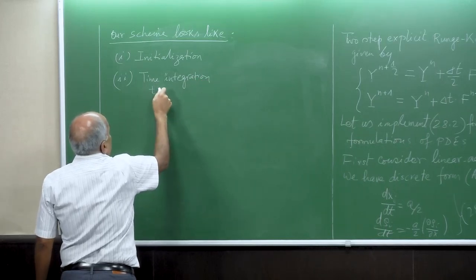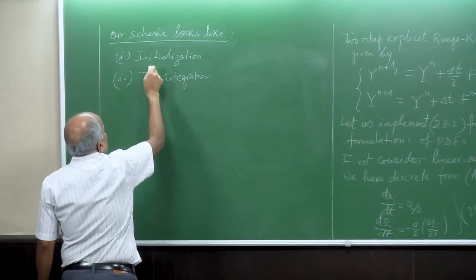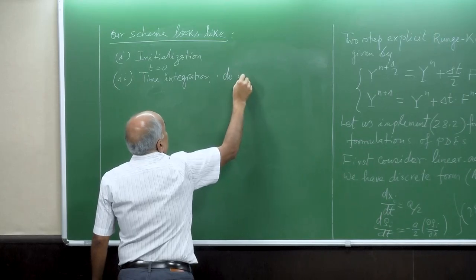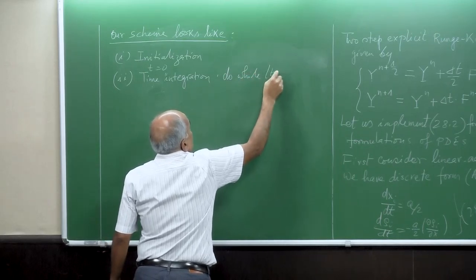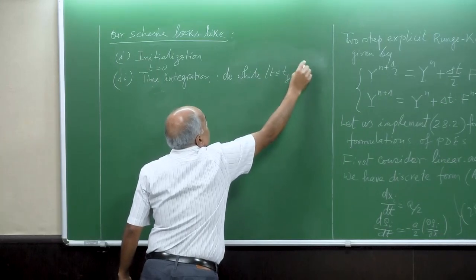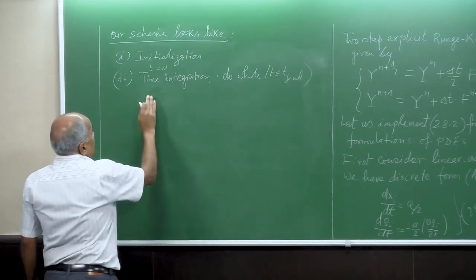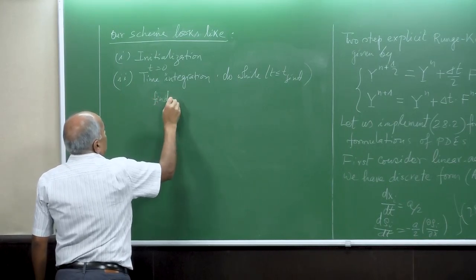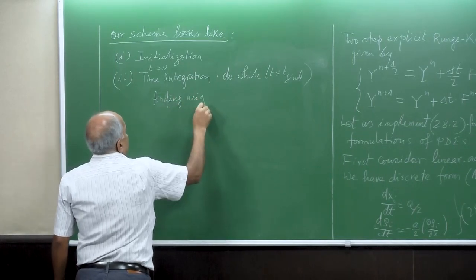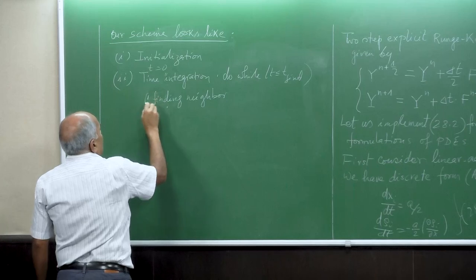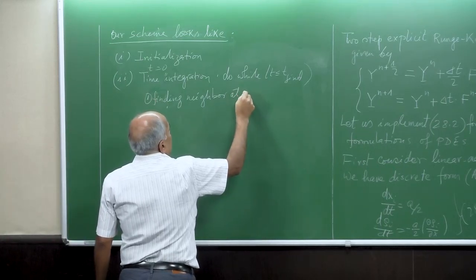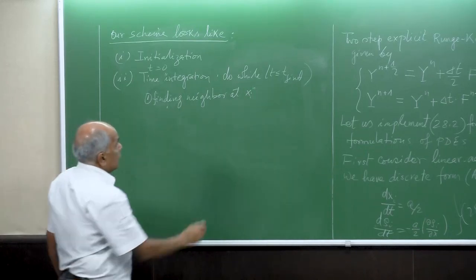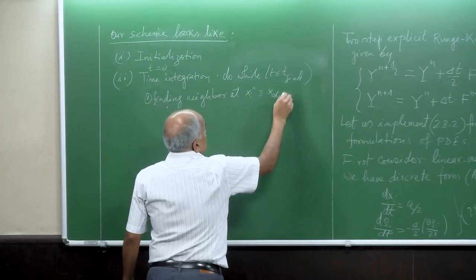The second part: after you do the initialization, then you do the time integration. Here, t is initially set to zero. Then do-while: t <= t_final. Inside the loop: finding neighbors — that is, finding x_old.